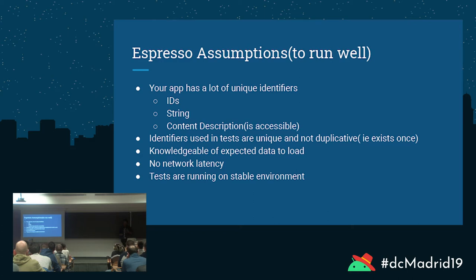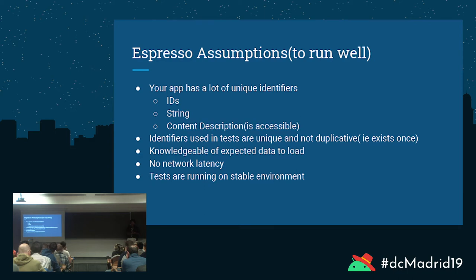It also assumes that identifiers are unique and not duplicative — meaning that on a single screen you will not see a specific ID or string more than once. It also assumes you know all the data that will be on screen after a user interaction, which is not always true if you are fetching data from the network. It assumes no network latency, and that your tests are running on a stable environment.